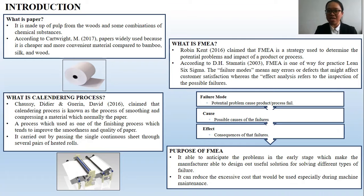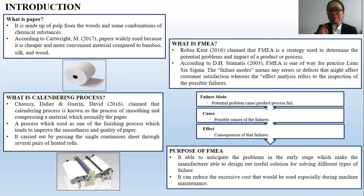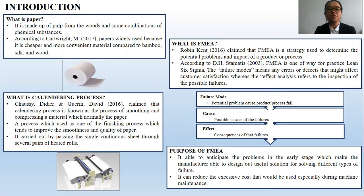What is FMEA? According to Robin Kahn 2016, he claimed that FMEA is one of the strategies used to determine the potential problems or impact for the process or product. There are two main purposes of applying FMEA. First, it is used to anticipate the problem in the early stage. Second, it stands to reduce the excessive process required, especially in terms of machine maintenance.